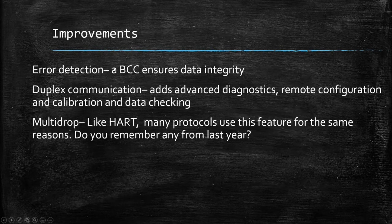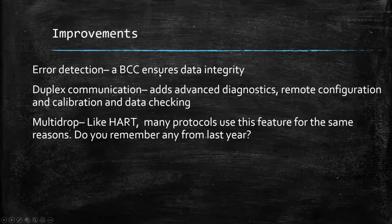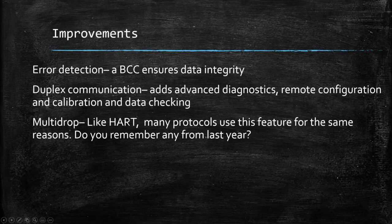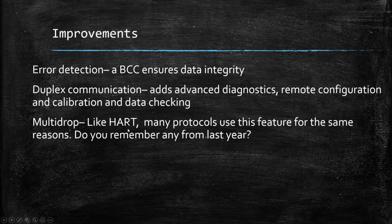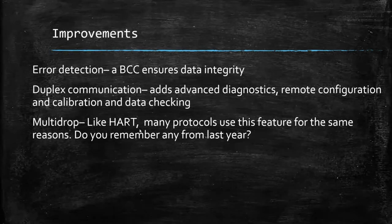Error detection — how do they do it? A block check character is a method of error detection used to ensure data integrity, so we know whether the data we're receiving is good. Before with analog, we didn't have a way to tell — we just took it at face value. Duplex communication, two-way communication, adds advanced diagnostics, remote configuration and calibration, as well as data checking capabilities. And a big thing about digital is multi-drop, like HART and many others we'll be discussing. In a bus, it's cheaper to wire with less wire — those are some of the benefits of multi-dropping.